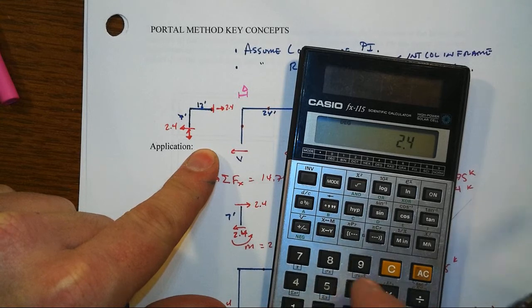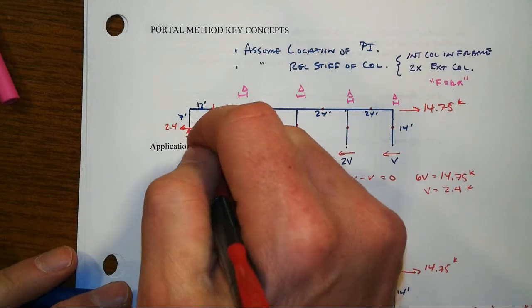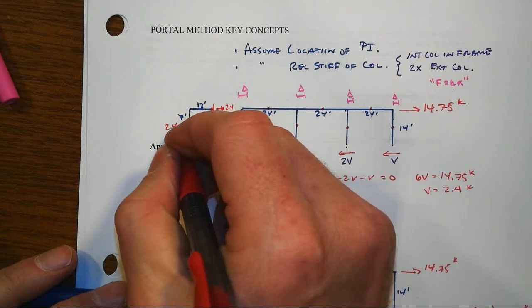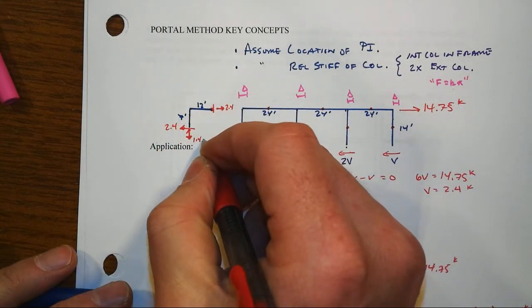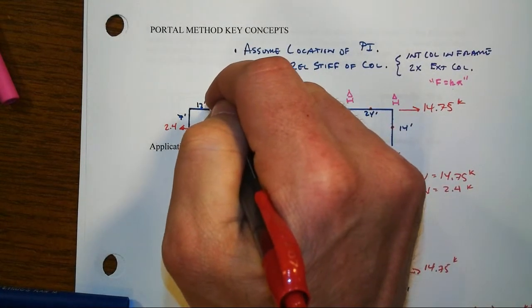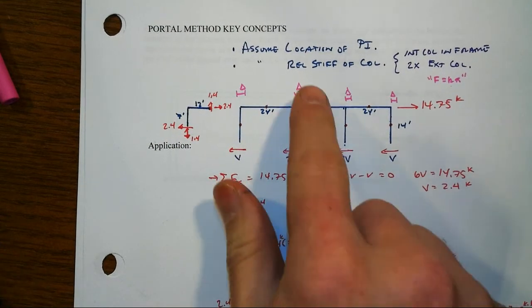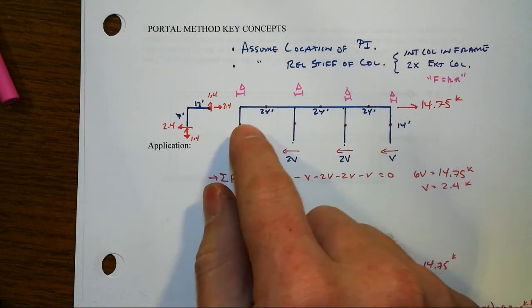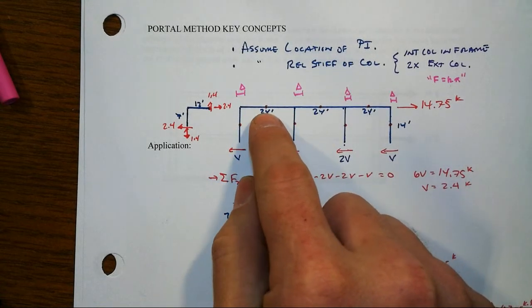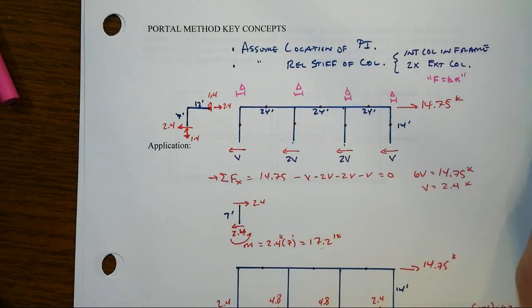So 2.4 times 7 feet divided by the 12 foot moment arm for the column, we're back to 1.4. Now it was really, this was 2.458, and this is going to be about 1.43, but rounded, that's where we're going to get those values. So we're getting to the same place just through different ways of doing that here in the portal method, all about assuming locations of points of inflection, say at the mid-height for the columns, mid-height or mid-span for the beams, and then assuming something about the relative stiffness of the columns, particularly in terms of shear stiffness.